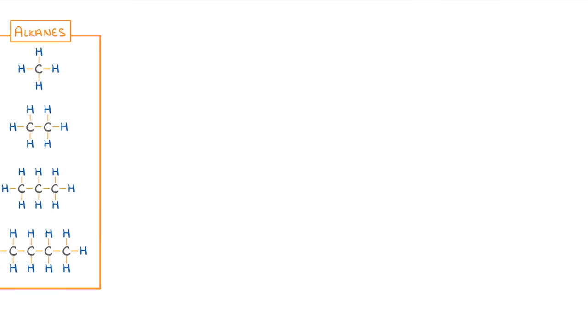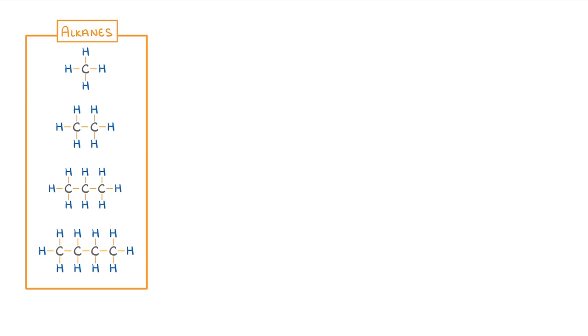We saw in the last video that alkanes are a homologous series of hydrocarbons that contain only carbons and hydrogen atoms, with no double bonds, and we covered the names of the first four alkanes in the series.